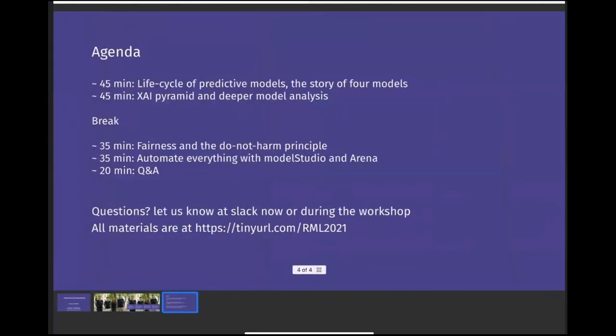Today we have about three hours divided into four parts. Before the break we are going to tackle two elements of responsible ML: the life cycle of predictive models, and then explainability in machine learning, including the SAFE pyramid and deeper model exploration. After the break, we'll tackle two fresh solutions — one related to fairness and the do-not-harm principle, and a second related to automation using Model Studio and Arena.